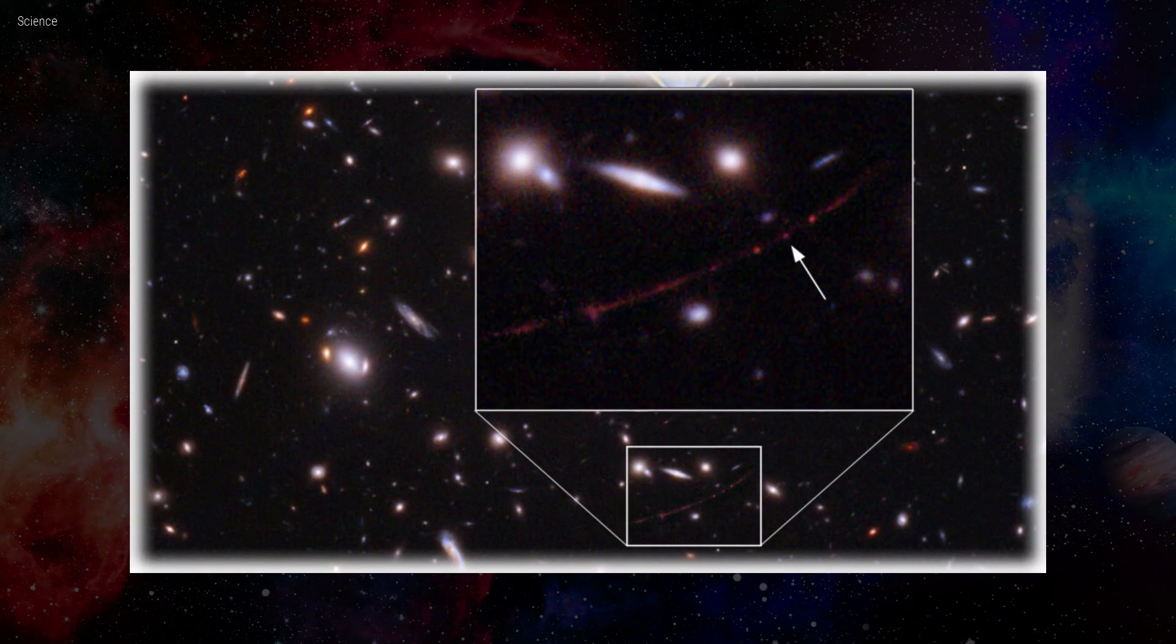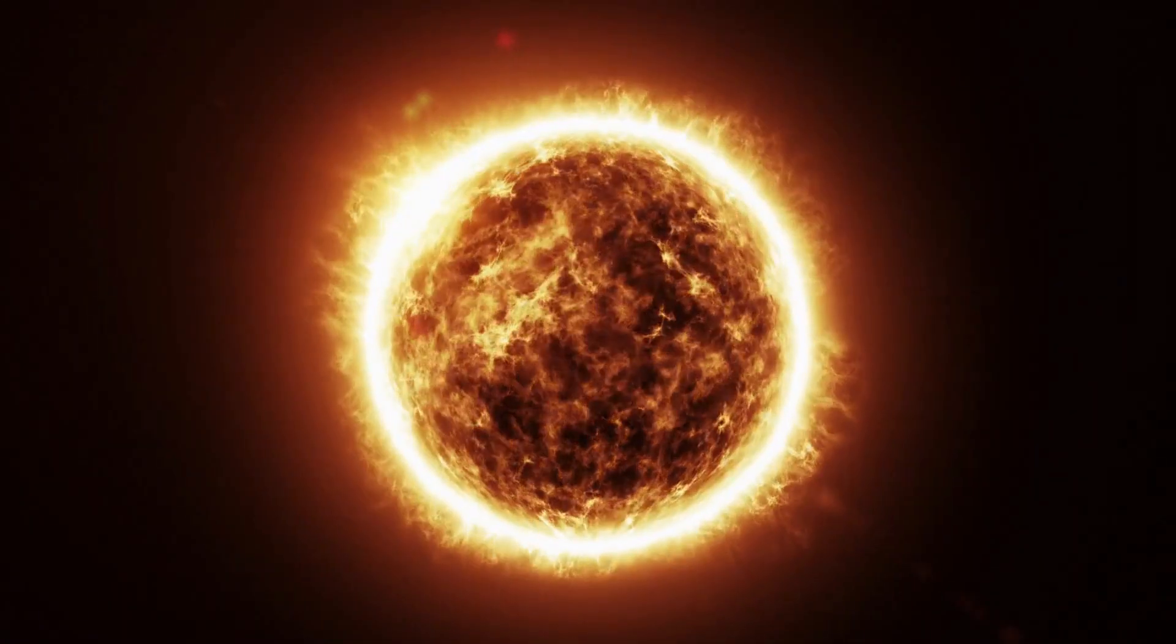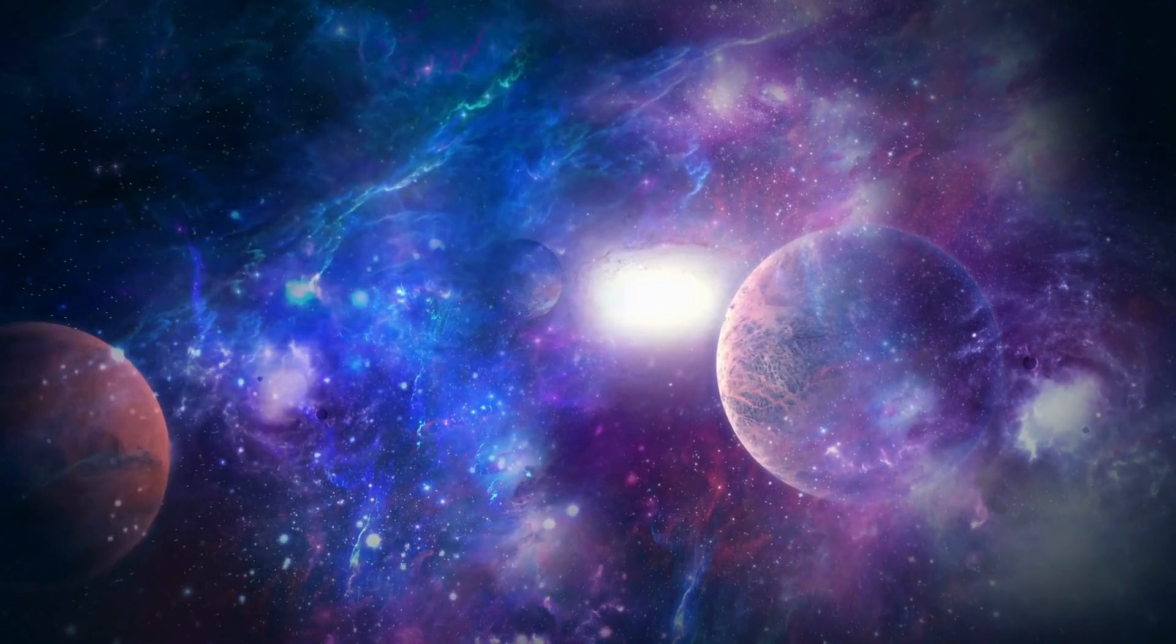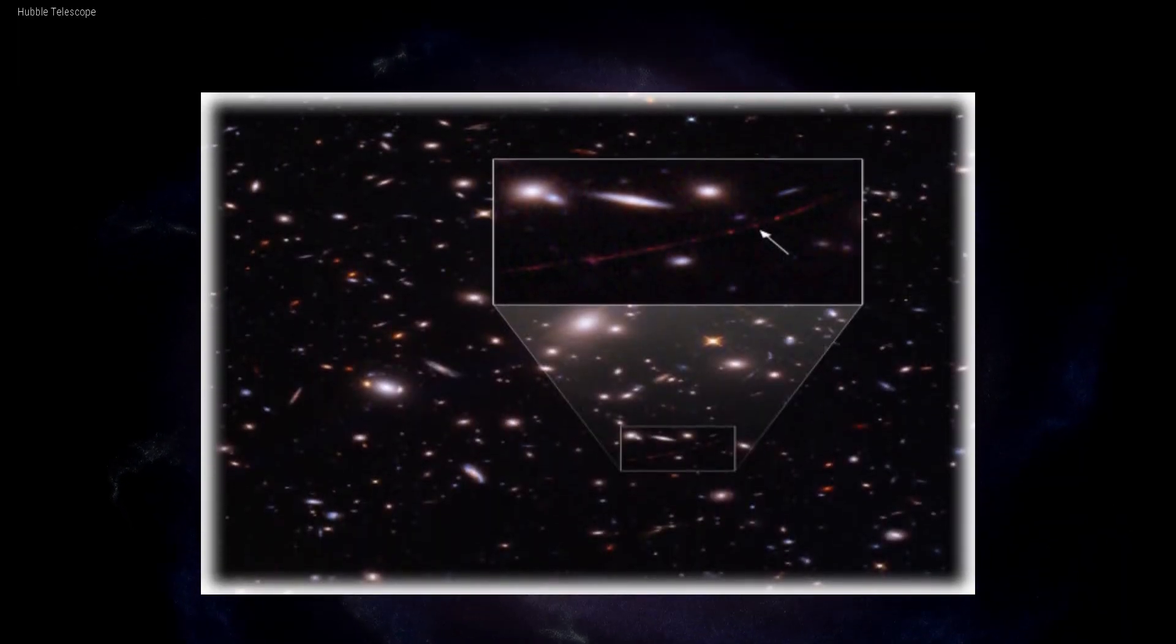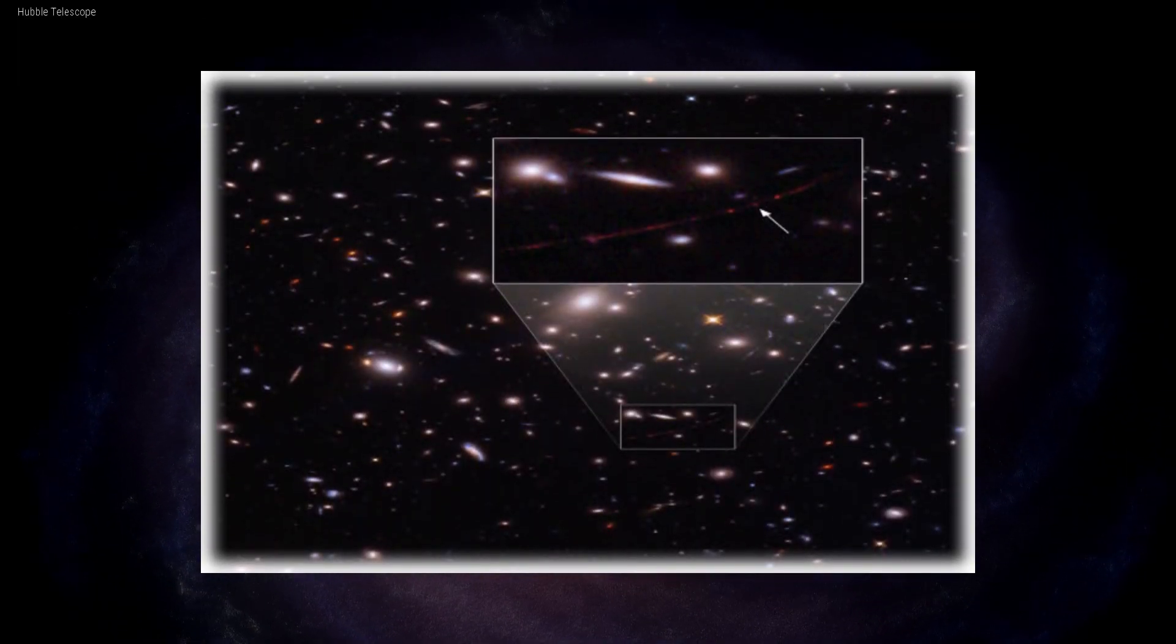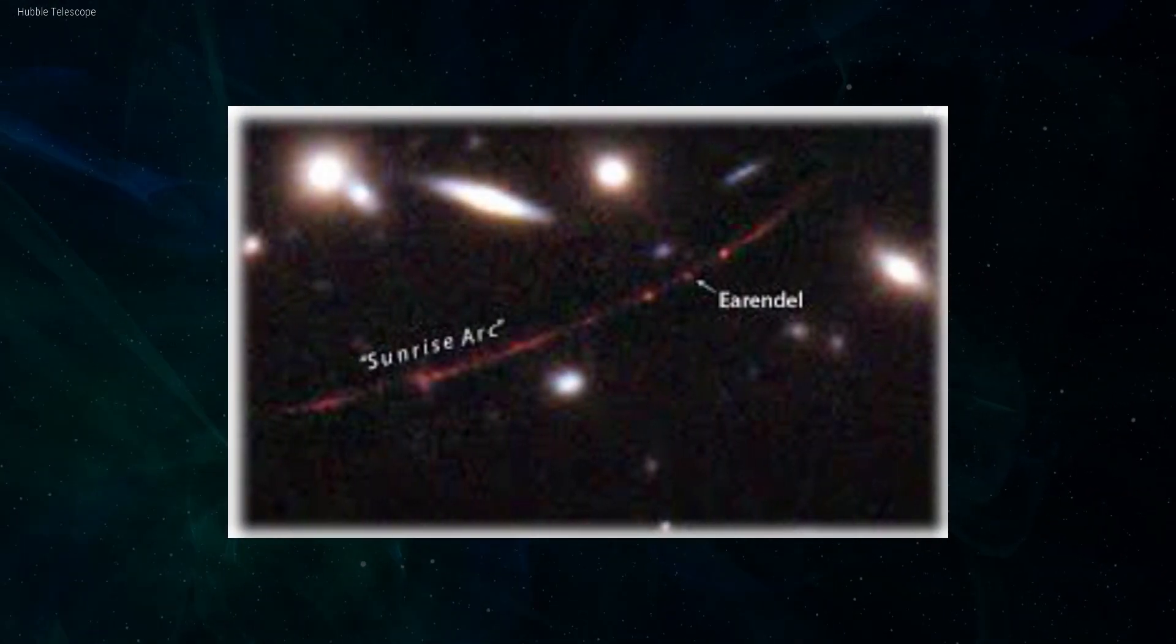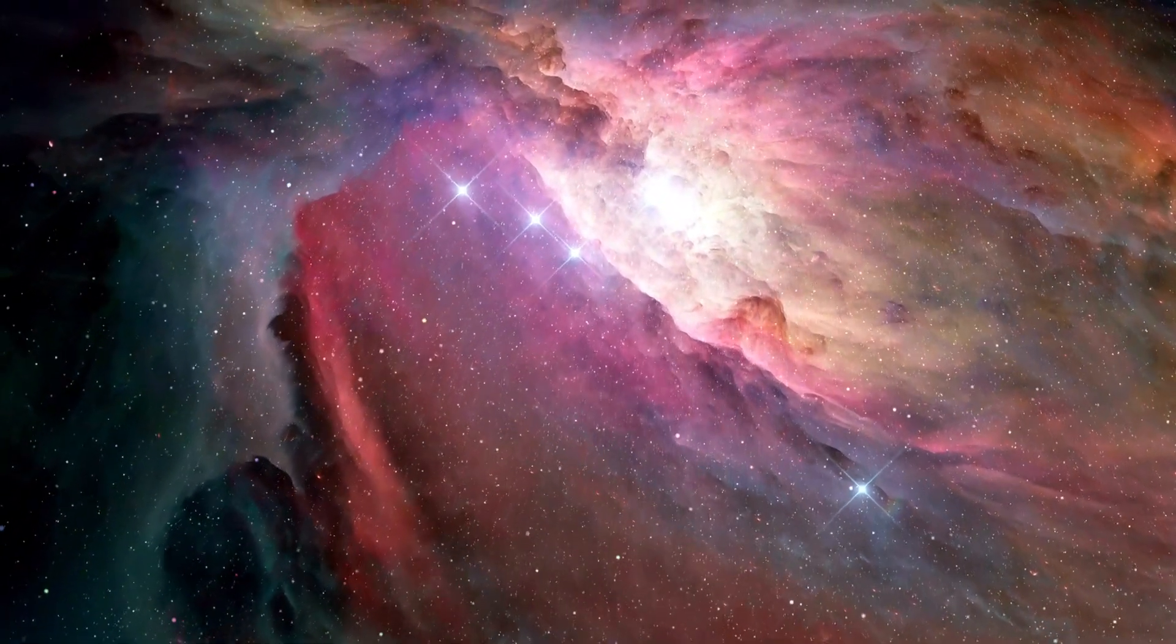Earendel, a resplendent B-type star, stands as a cosmic leviathan, boasting a heat that exceeds our sun's embrace twofold and casting a brilliance that outshines the ordinary by a millionfold. As we turn our gaze to this star, its moniker, WHL0137-LS, is eclipsed by the whimsical and poetic Earendel, a name that reverberates through the starlit symphony of the universe.